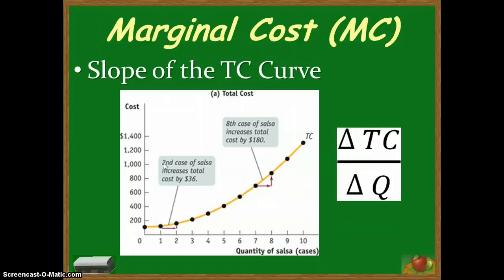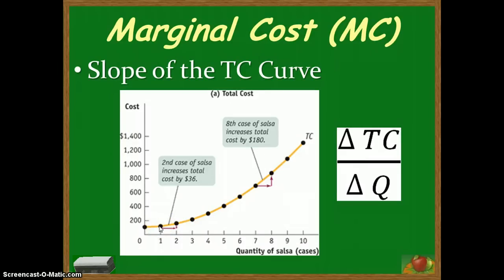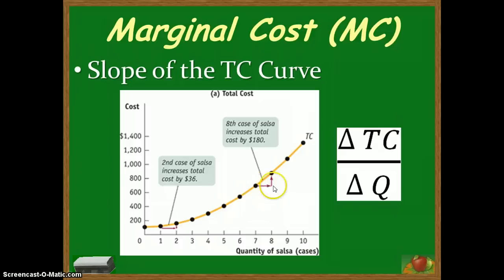Just like with the total product curve, there is a marginal curve that goes with total cost, called the marginal cost curve. It is the slope of the total cost curve, because it looks at the increase in cost with an increase in quantity. When I go from one case of salsa to two, I'm going to increase my total cost by $36 — that would be the marginal cost, the additional cost incurred for increasing production by one unit. Marginal cost begins to slope upward because when we go from the seventh case to the eighth, our total cost increased by $180, due to diminishing marginal returns on labor.